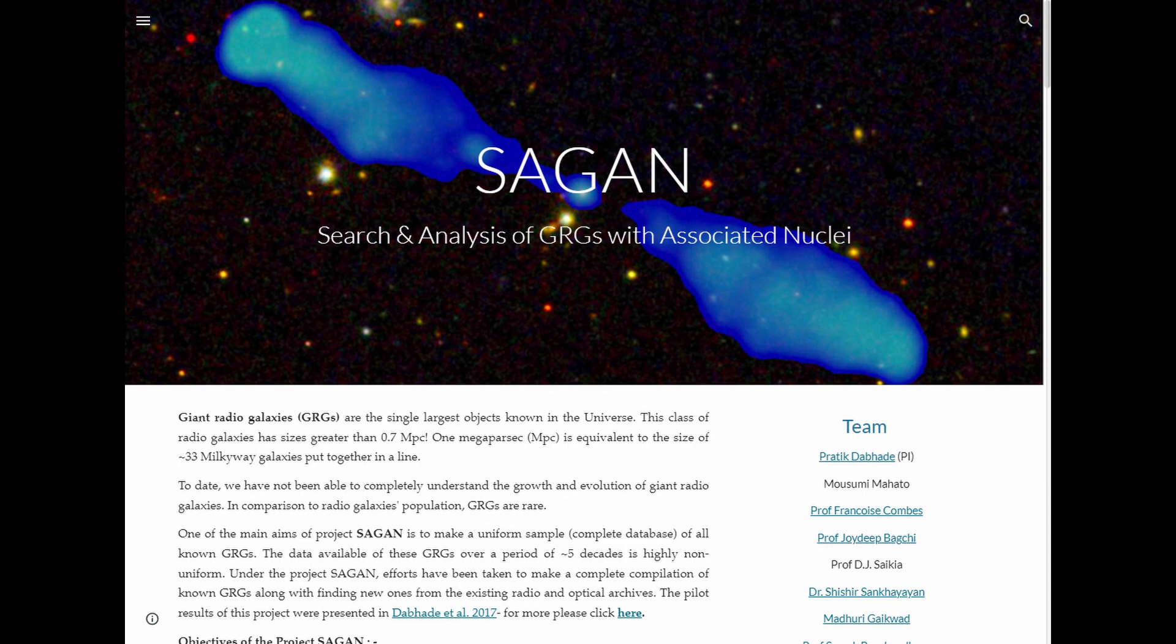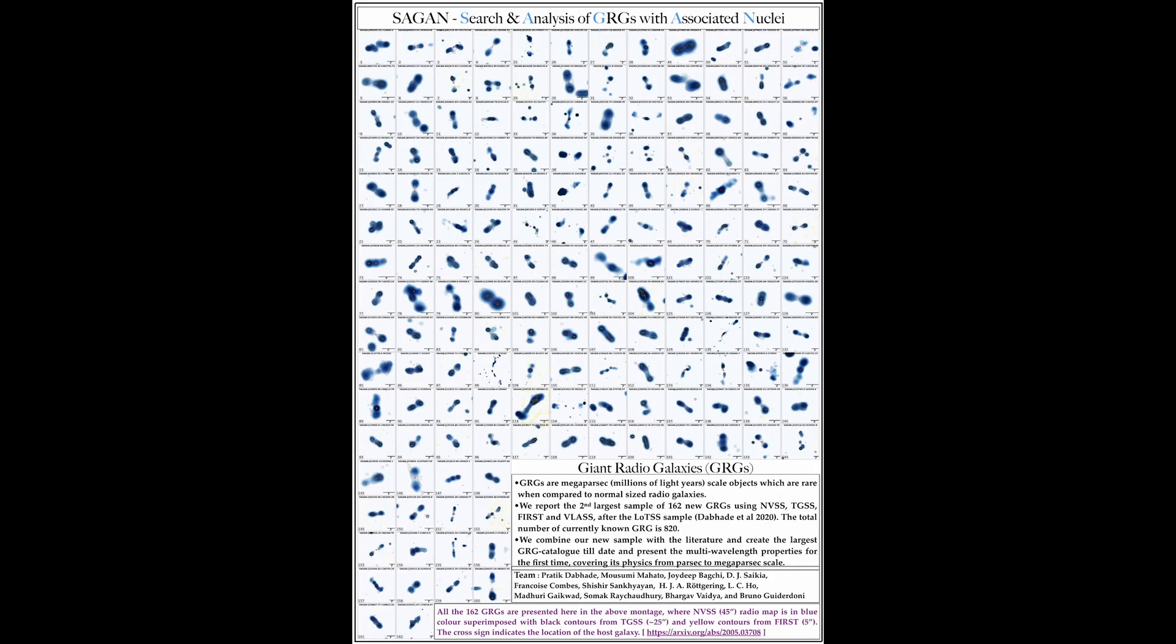The project Search and Analysis of Giant Radio Galaxies or SAGAN has so far identified 820 of these. These studies have provided three alternative mainstream explanations for the enormous size of these giant radio galaxies.